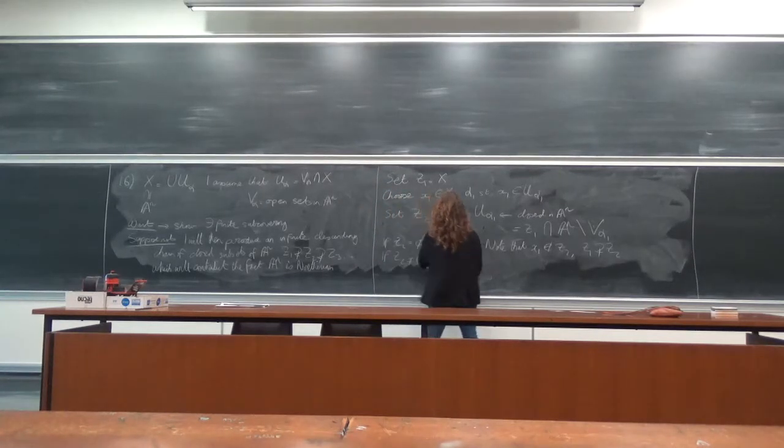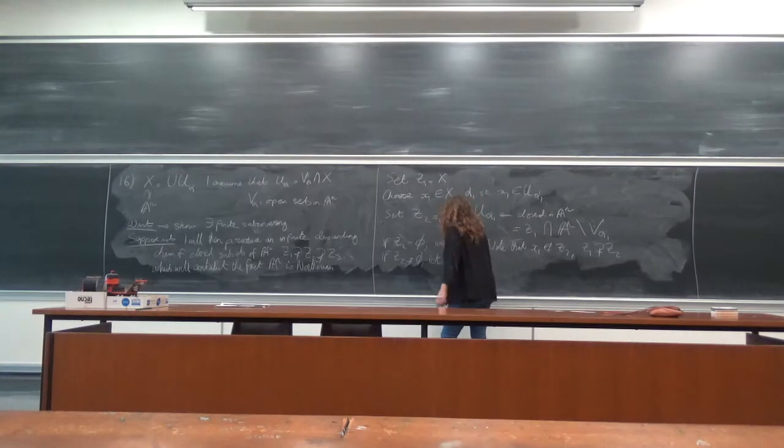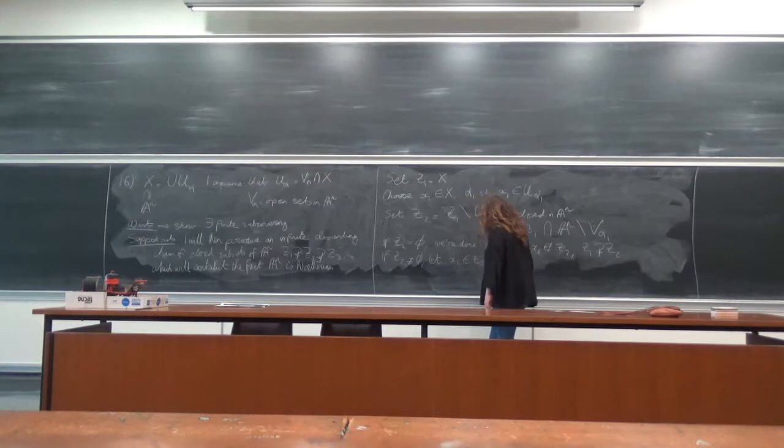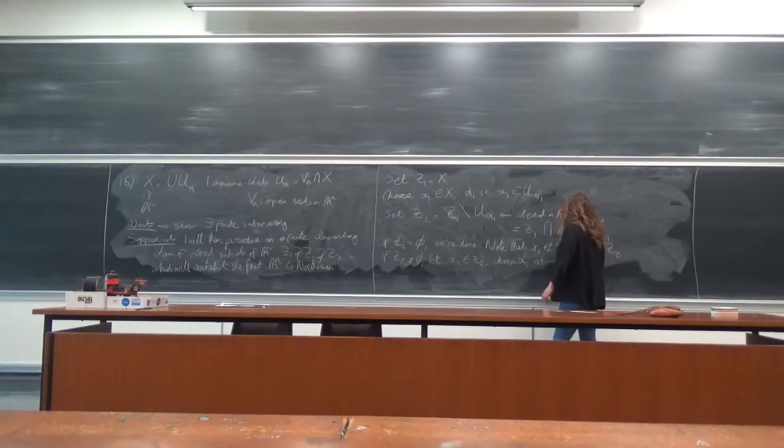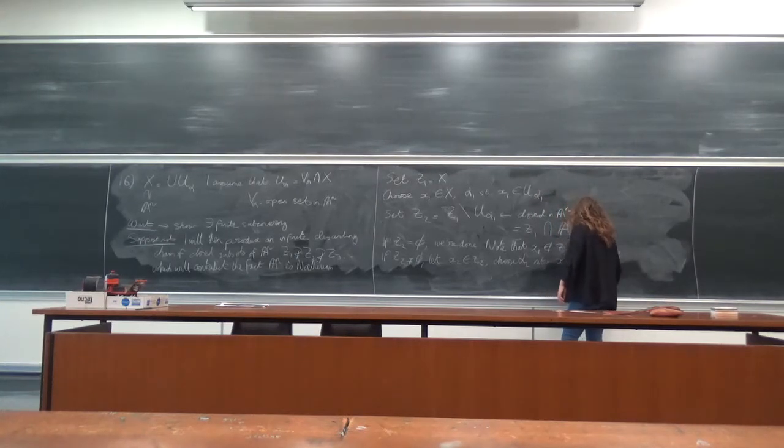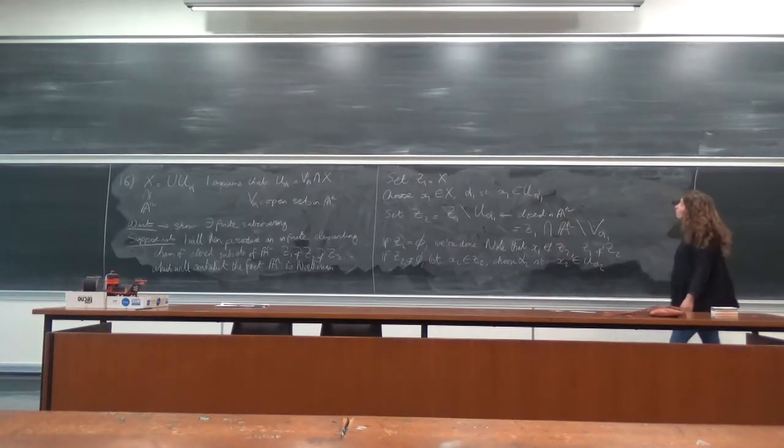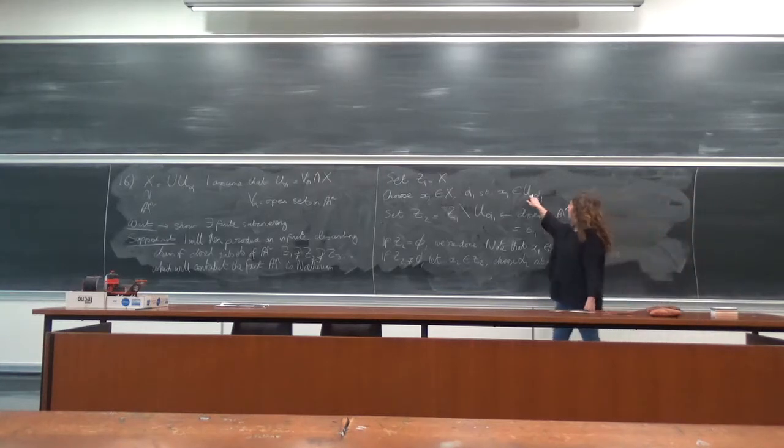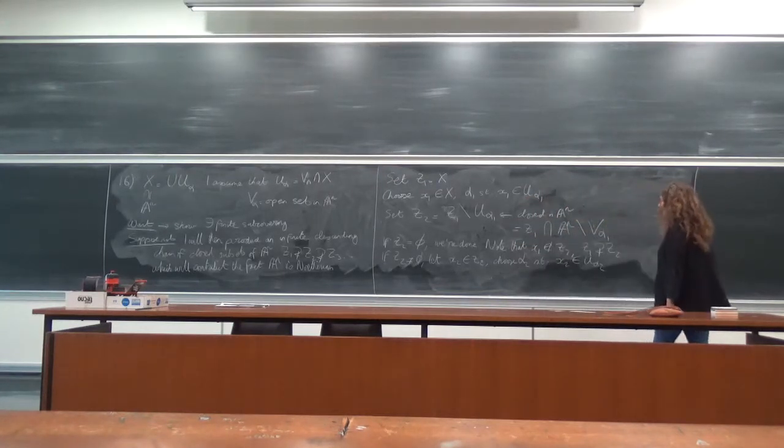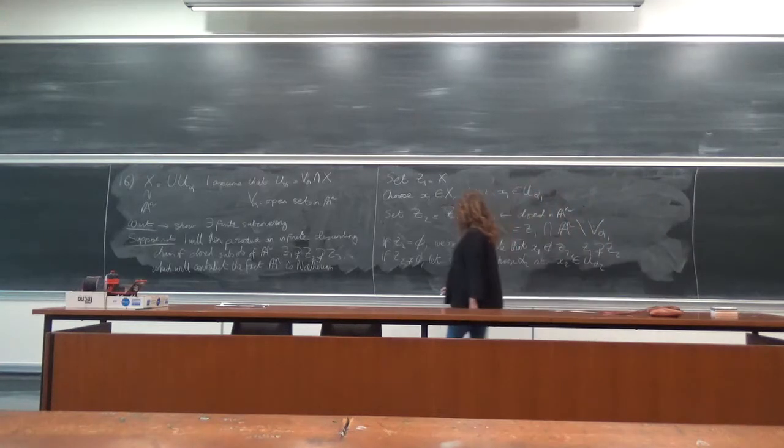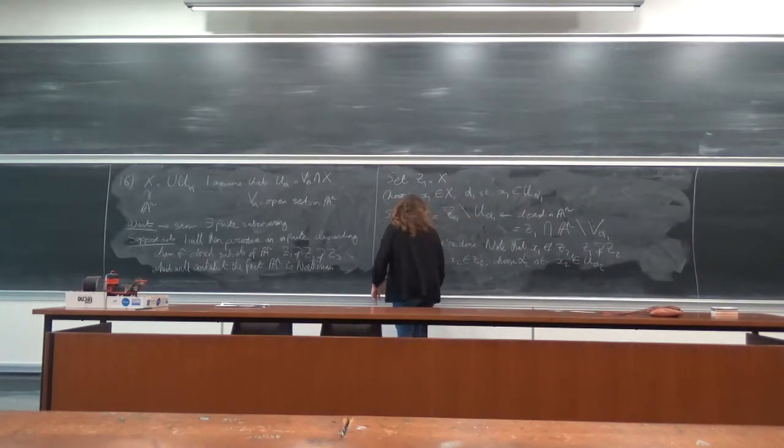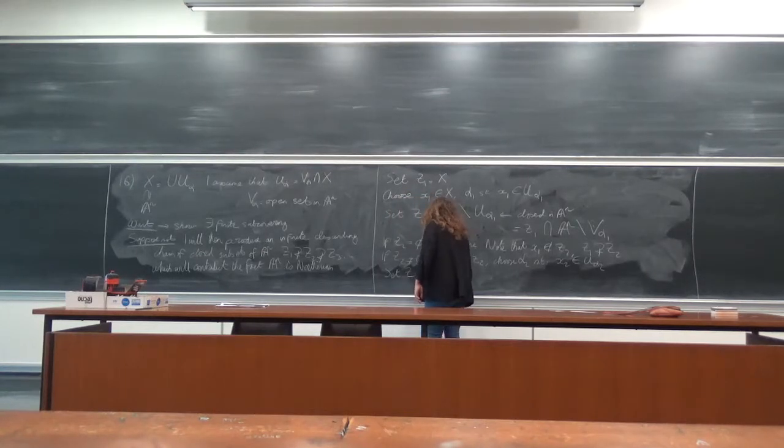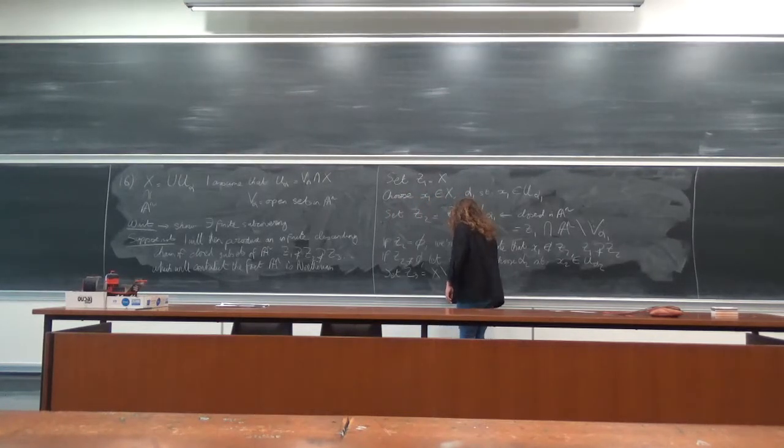Let x2 be an element in Z2 and choose an alpha 2 such that x2 is contained in U_alpha2. We know that's possible because these U_alpha i's are covering X. And now set Z3 equal to X set minus U_alpha2.